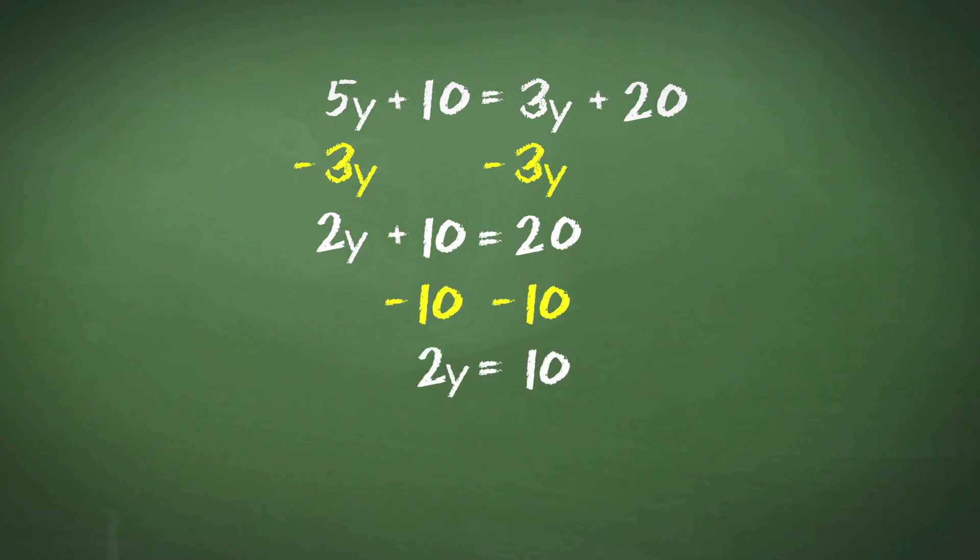And then to get from 2 lots of y to just 1, we divide by 2. 2y divided by 2 equals 10 divided by 2, to get our final answer of y equals 5.